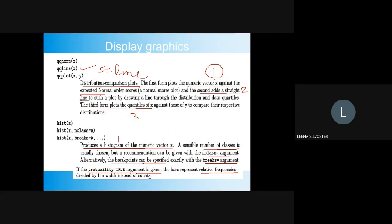For histograms, the hist() function produces a histogram of the numeric variable x, and a sensible number of classes can be chosen. The number of classes can be controlled with the nclass argument, and break points can be specified with the breaks argument. If the probability=TRUE argument is given, the bars represent relative frequency divided by bin width instead of count.